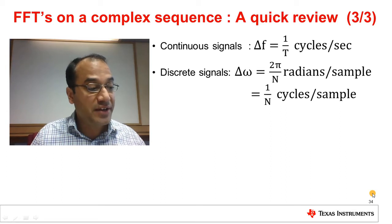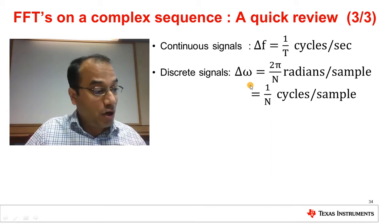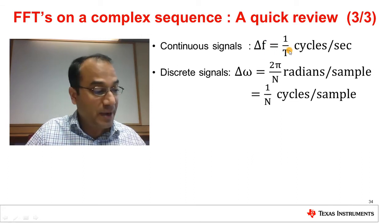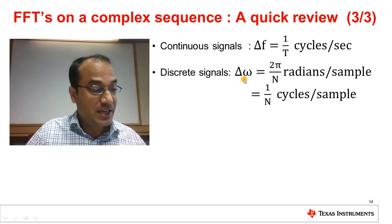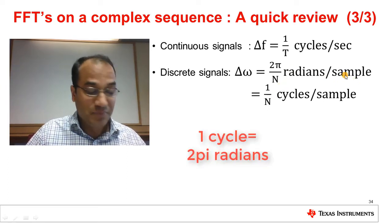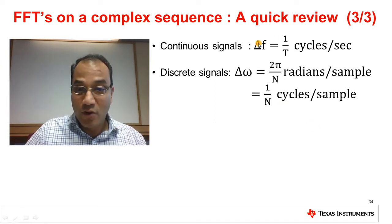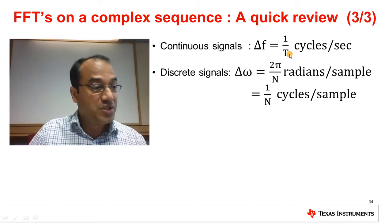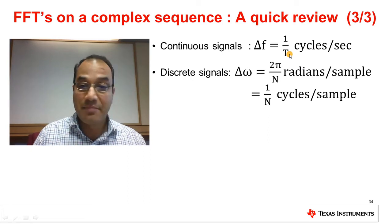Let's compare the resolution criteria for discrete and continuous signals. For a continuous signal, two frequencies can be resolved as long as their separation delta-f is more than 1/T hertz, T being the observation window. For discrete signals, two discrete frequencies can be resolved as long as their separation delta-omega is more than 2π/N radians per sample — equivalently 1/N cycles per sample, since each cycle is 2π radians. The correspondence between the two cases comes through clearly: in both cases, resolution is inversely proportional to the observation length, whether expressed as time T or number of samples N.